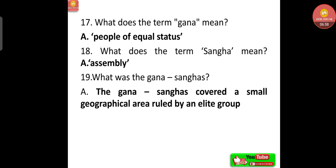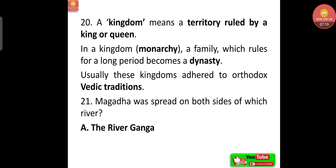The term Gana means people of equal status. The term Sangha means assembly. Ganasangha is a combined word — Ganasanghas covered a small geographical area ruled by an elite group. A kingdom means a territory ruled by a king or queen, and in a monarchy, a family that rules for a long period becomes a dynasty, usually adhering to orthodox Vedic traditions.